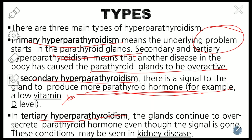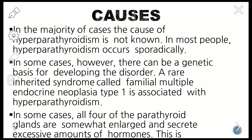In tertiary hyperparathyroidism, the gland continues to oversecrete parathyroid hormone even though the signal is gone. These conditions may be seen in some kidney diseases. In the majority of cases, the cause of hyperparathyroidism is not known. In most people, hyperparathyroidism occurs sporadically, though in some cases there can be a genetic basis for the disorder.